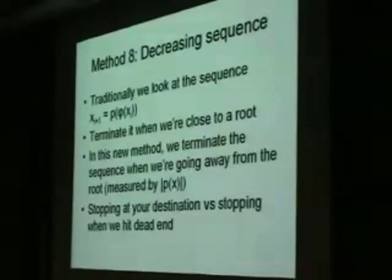I call this method — I think it's not a bad name, but your suggestions are welcome — the Decreasing Sequence. If you think about any practical algorithm, there are traditionally two ways to stop. One is when we are no longer moving anywhere — when the next iteration is pretty much the same as the previous one, and steps get smaller and smaller, so there's no need to go further. The other is when the absolute polynomial value is less than a certain number, meaning we found the root — then we stop the iterations.